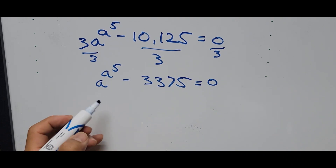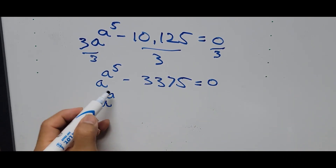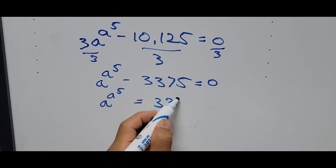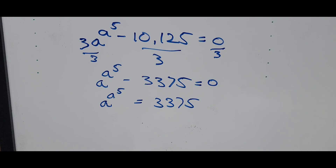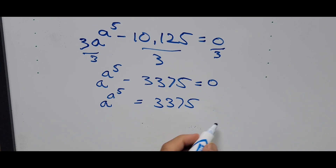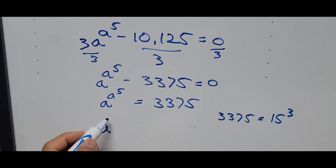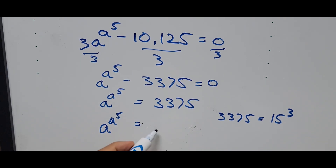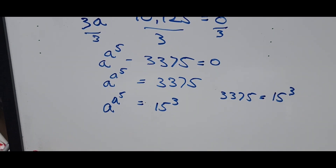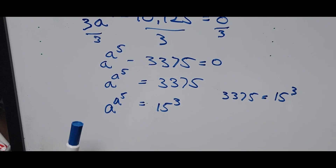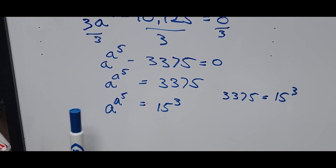Next, we move the constant to the right side of the equation, giving us a raised to a raised to the fifth power equals 3,375. This big number, 3,375, can be written as 15 raised to the third power. So we now have a raised to a raised to the fifth power equals 15 raised to the third power.